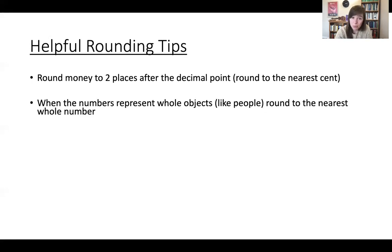Okay, but in the case where numbers represent whole objects, like people, then round to the nearest whole number. It doesn't usually make sense to say, oh, well, there will be like 3.4 people at the event. That doesn't make sense. So if you are rounding a number that is representing an object, and that object can't be divided, then it makes sense to round to the nearest whole number.